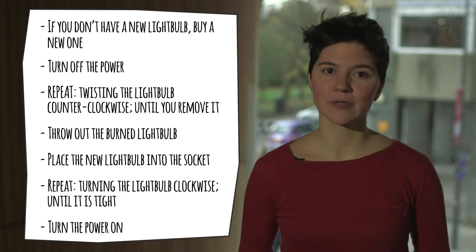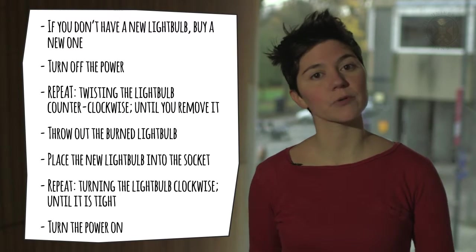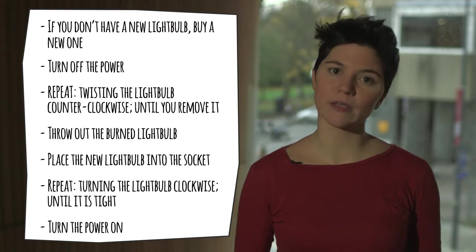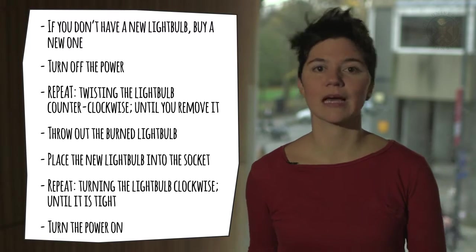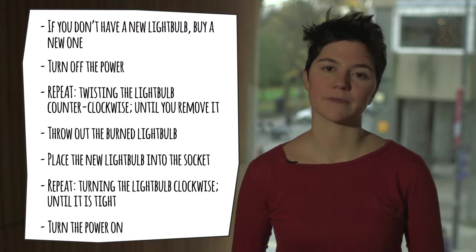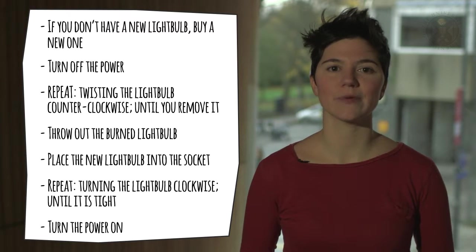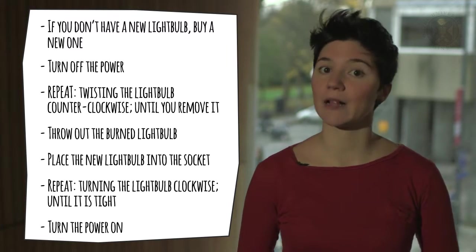Now that we've seen what selection is about, let's go back to our algorithm for changing a lightbulb. This algorithm starts with a decision on whether a new lightbulb is available. If I don't have a new lightbulb, then I buy a new one, and after that I continue with the rest of the steps. If I do have a new lightbulb, then I simply proceed to the next step of the algorithm.